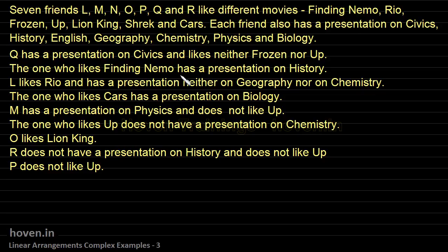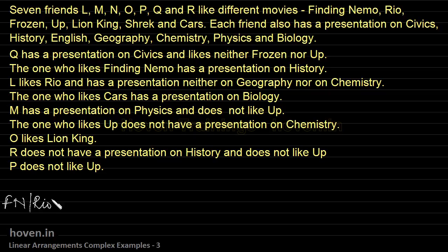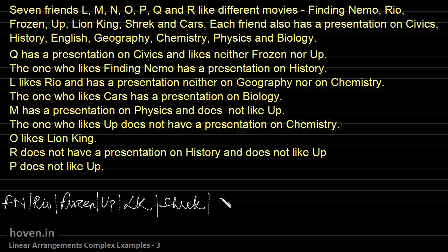Let us begin by writing the names of the movies in a horizontal line. We will also write the names of the subjects and then interpret the conditions. The movies are: Finding Nemo (FN), Rio, Frozen, Up, Lion King, Shrek, and Cars.